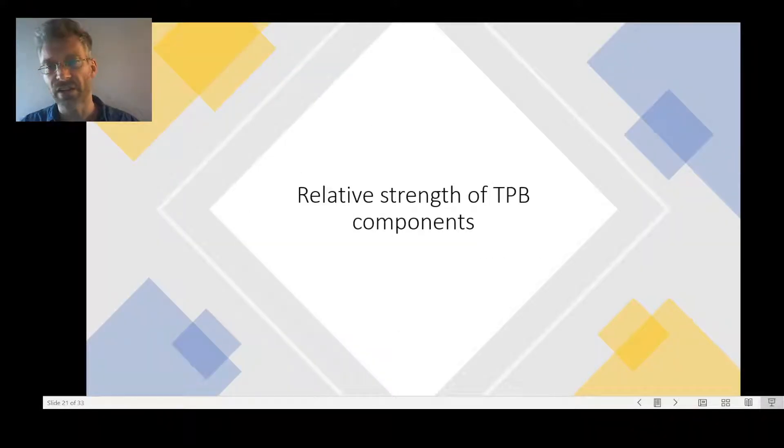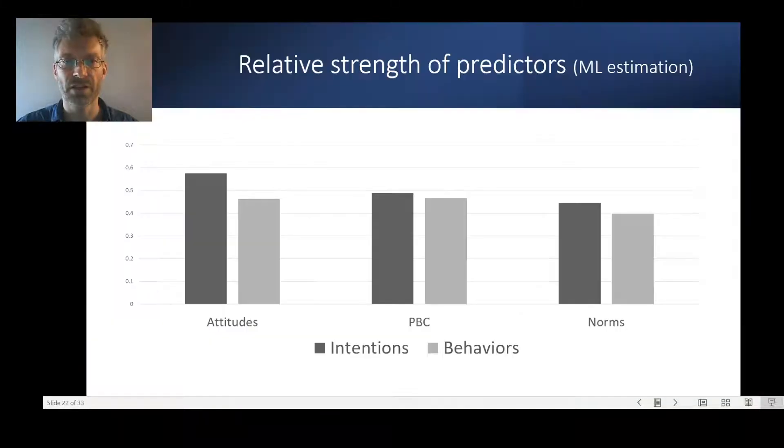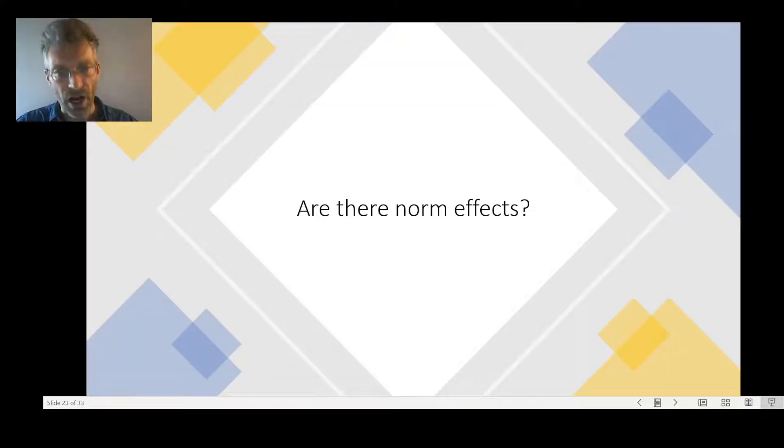First of all, what is the relative strength of these different components within the theory? As you can see here, attitudes continue to show some of the strongest correlations with both intentions and behaviors, followed by perceived behavioral control. But the subjective norm effects are actually much stronger than in previous research. So are there norm effects? Yes, there are.